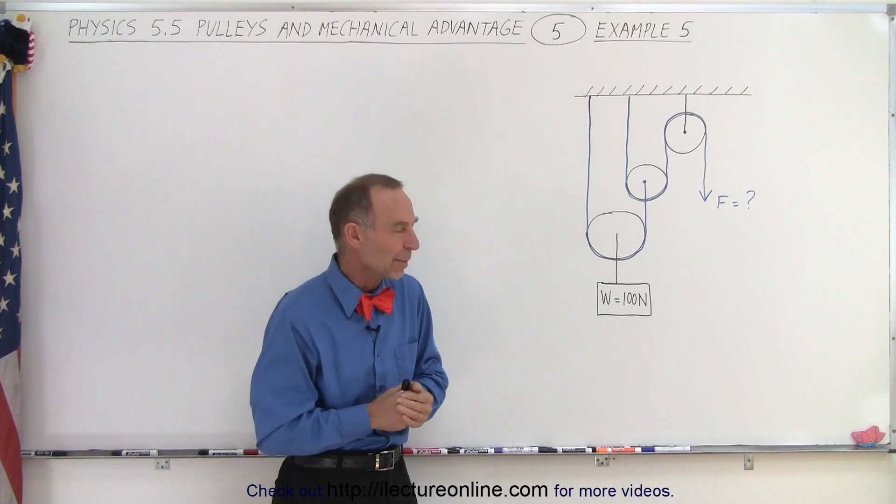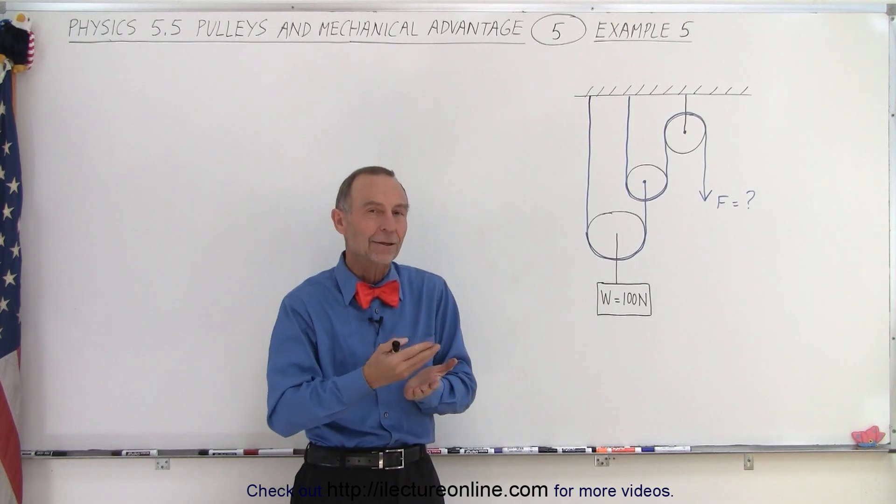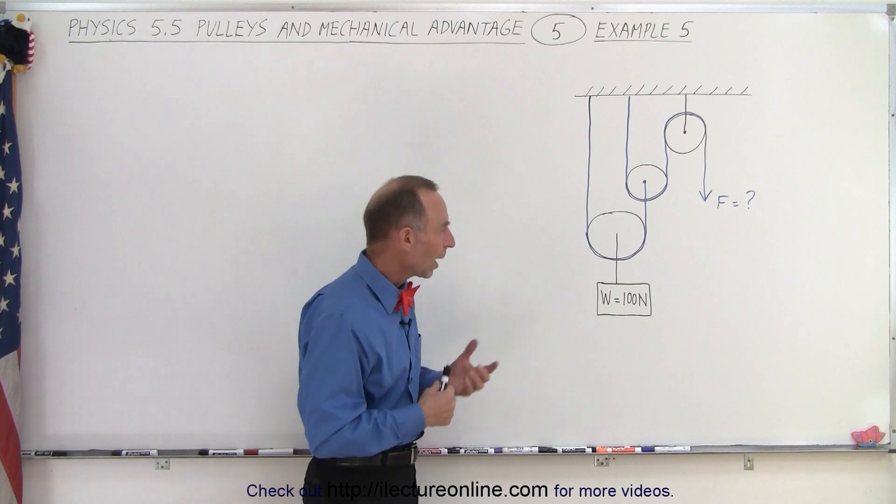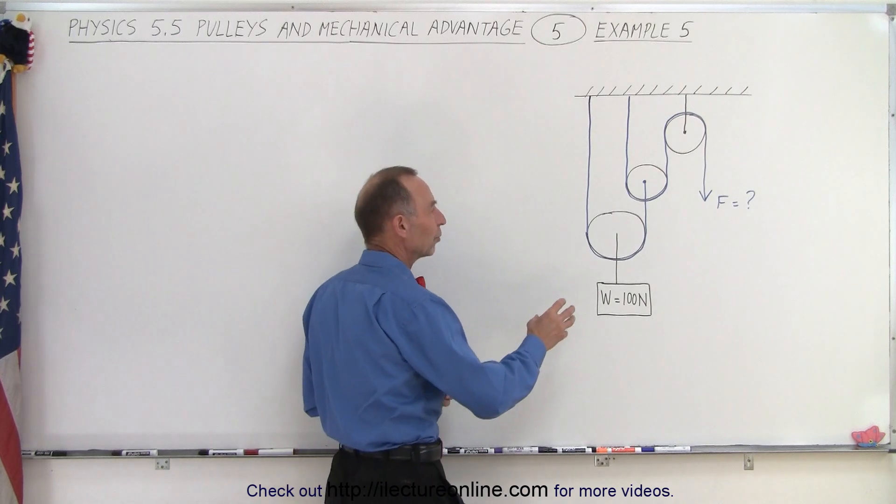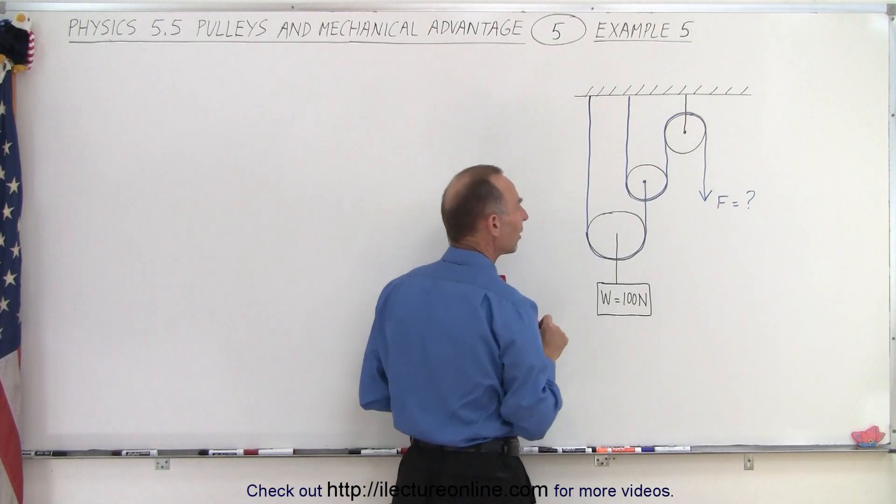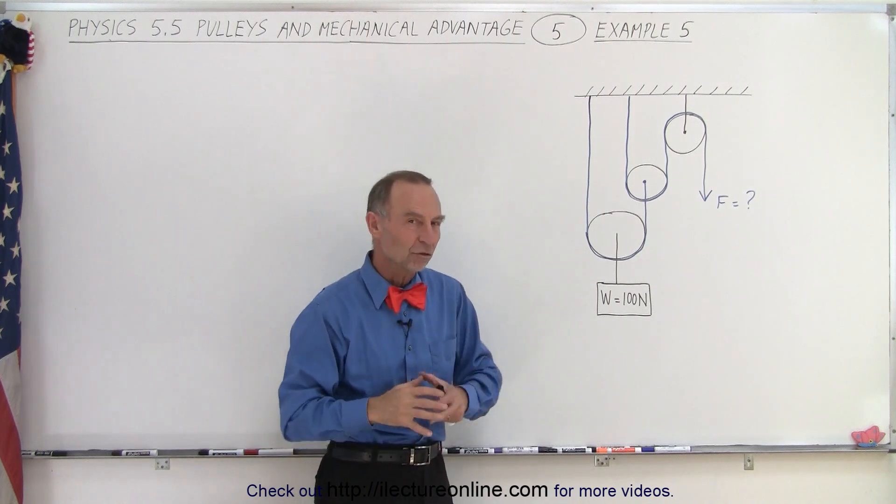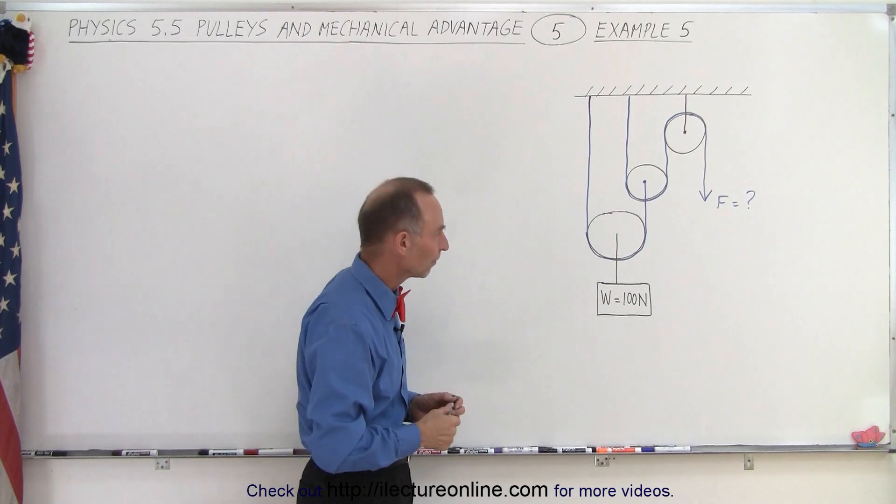It takes the exact same amount of force and of course we want to know the mechanical advantage. So how do we do that? Well first of all we need to assume that none of the pulleys have mass and none of the pulleys have friction so we're dealing with an ideal situation.